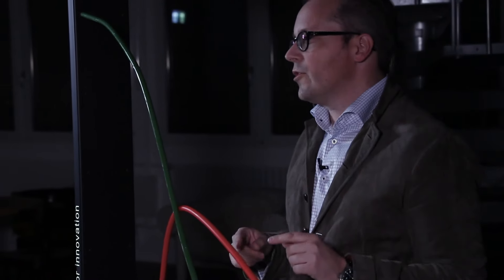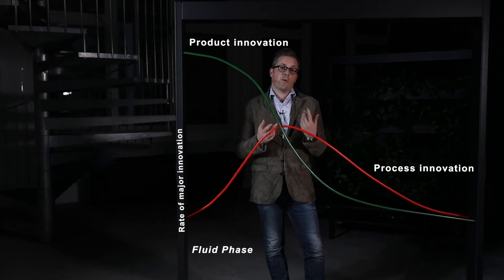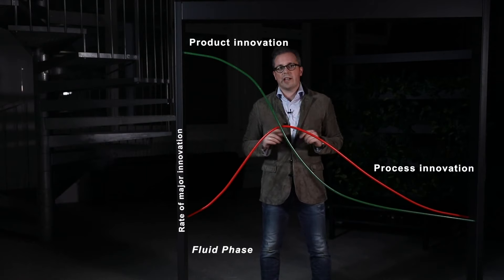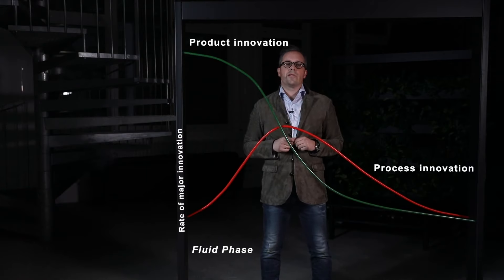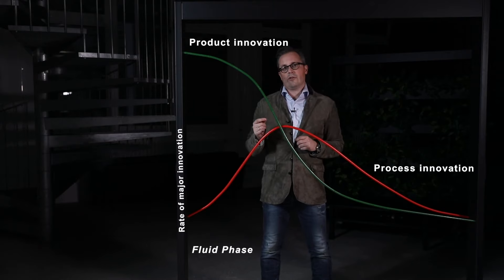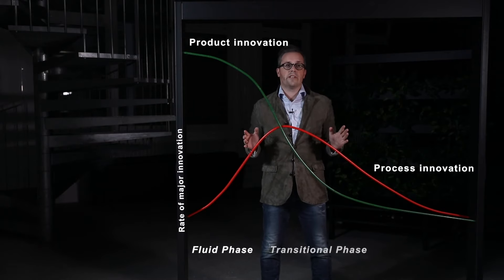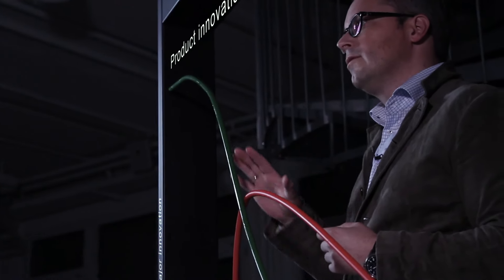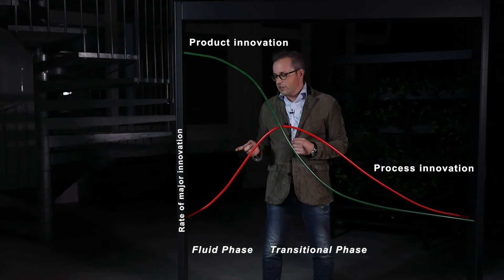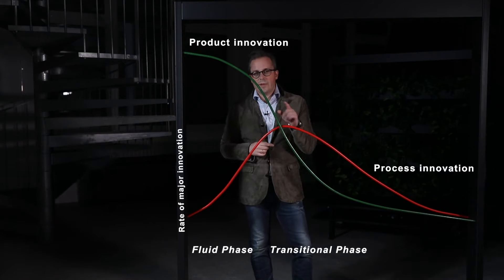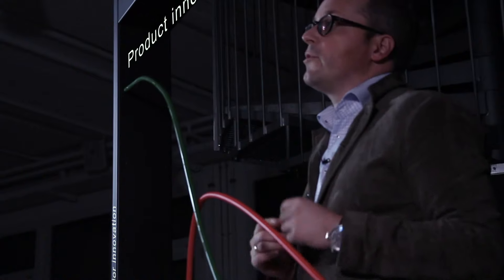A dominant design has the effect of enforcing or encouraging standardization so that production or other complementary economies can be solved. Also, once the dominant design emerges, the basis of competition changes radically as the industry enters a transitional phase in which major product innovation slows down and the rate of major process innovation speeds up.